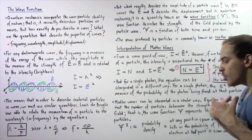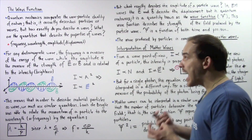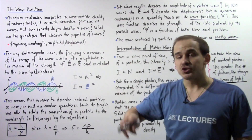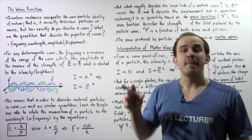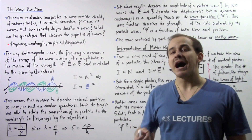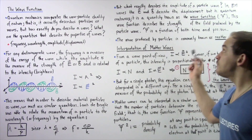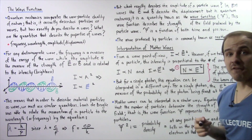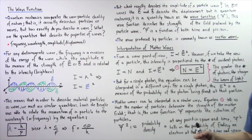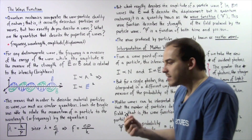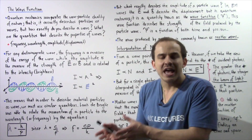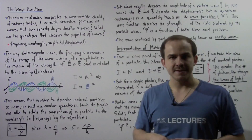The wave function of our particle tells us the magnitude of displacement, or the magnitude of the matter field, of the matter wave produced by that particle. And if we square that wave function, that gives us the probability density, which gives us the mathematical probability of finding an electron in a certain region and at a certain point in time.